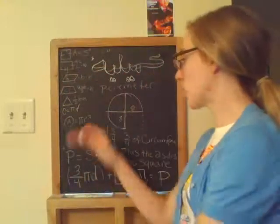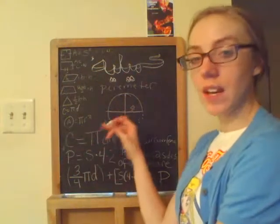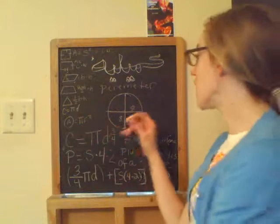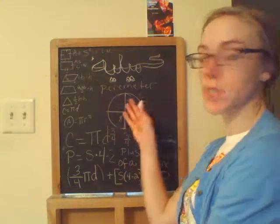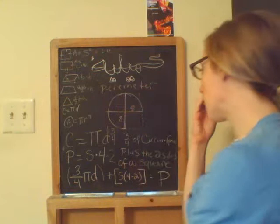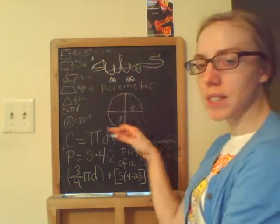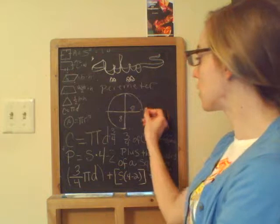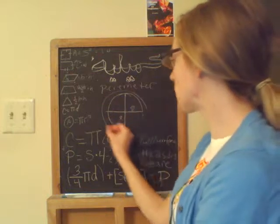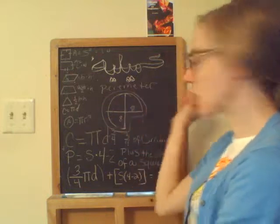And now, before I show you how to find the area of this object here, first I want to teach you how to find the perimeter of this object. As you can see, it's basically three-fourths. Remember, to find the perimeter, the distance is all the way around an object.